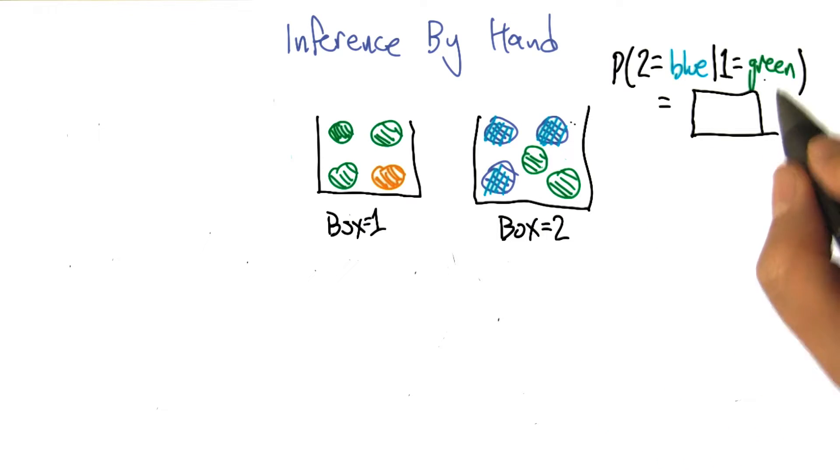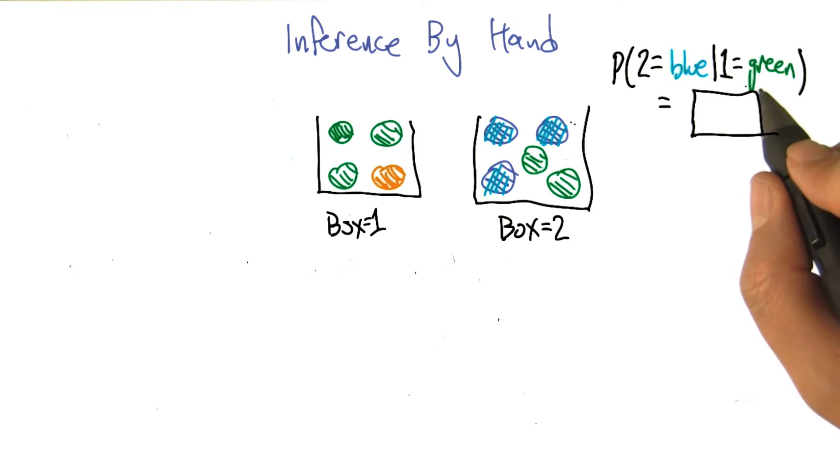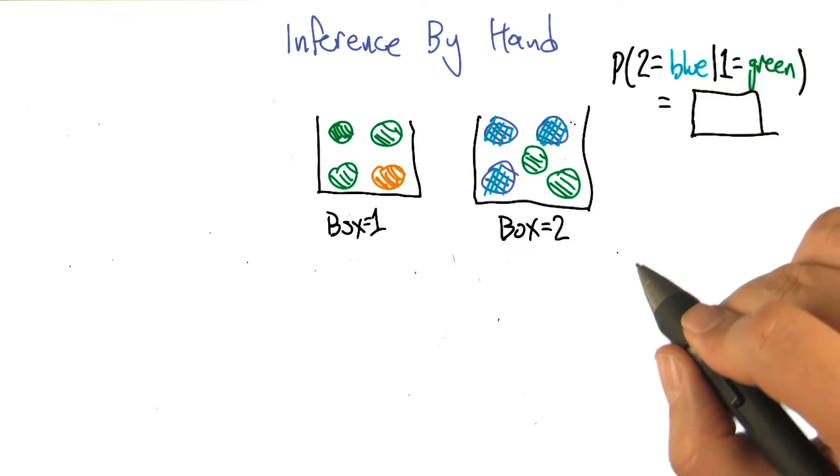And let's say it turns out to be green. All right, so the first draw that we make, we have a green ball. We reach into that same box a second time. And the question is, what's the probability that that second ball will be blue, given that the first one we drew was green.